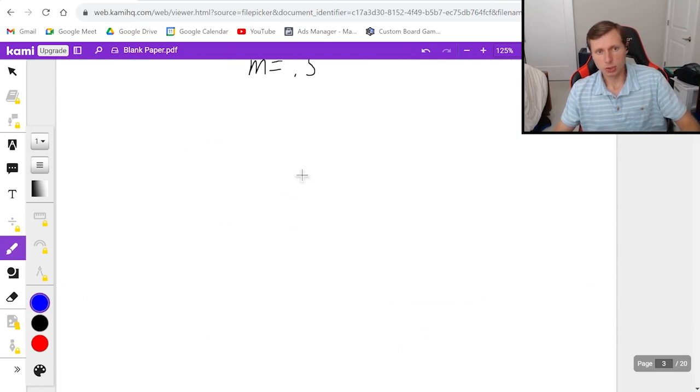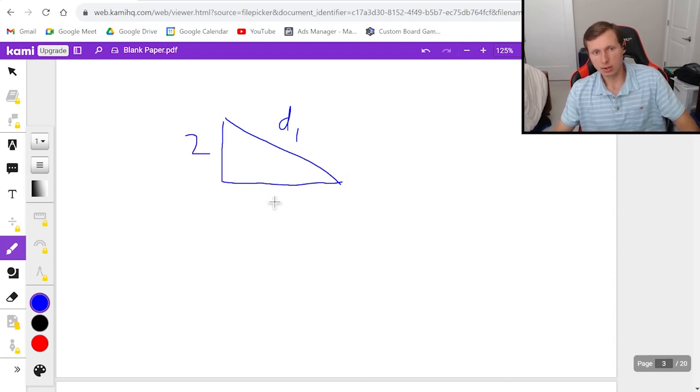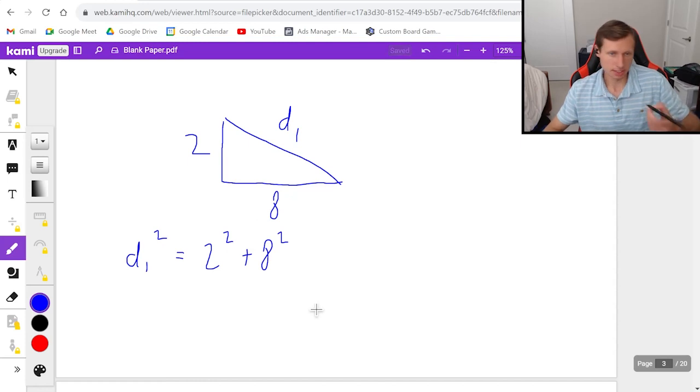So d1, let me just draw it below. Here's d1, the hypotenuse. This side of the triangle is two meters. This side on the bottom is eight meters. And to find d1, it's just going to be d1 squared equals two squared plus eight squared. That's Pythagorean theorem for us. And then if you solve this, because I'm assuming you know how to solve for Pythagorean theorem by now, you will get 8.25 meters. That is d1.